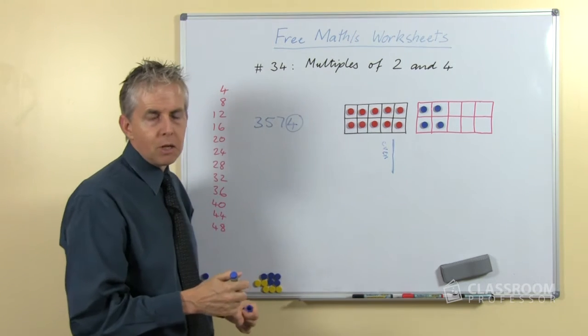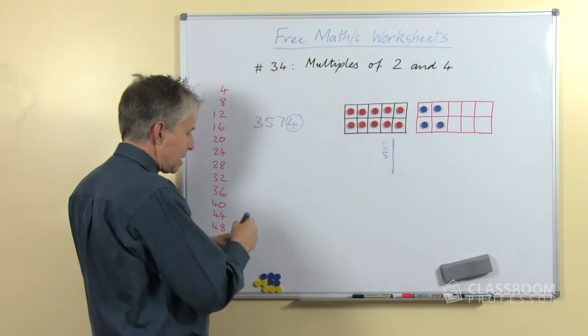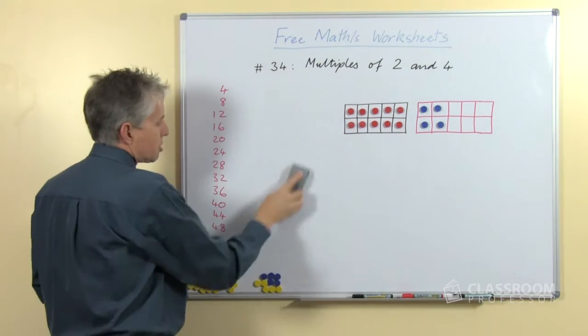The last digit, if it's a multiple of 2, if it's an even number, including 0 of course, then the whole number is a multiple of 2. So that's quite straightforward.